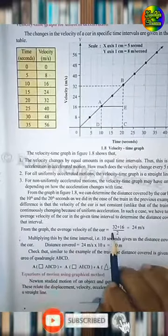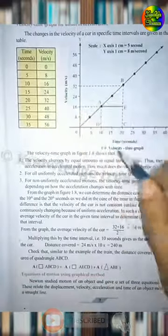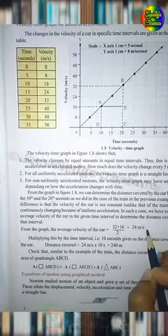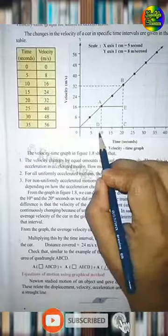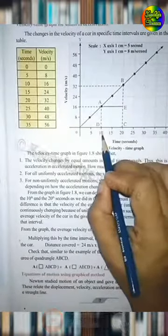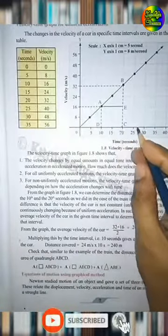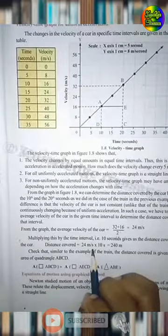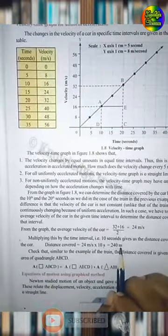Therefore, the average velocity of the car is equal to 32 plus 16 divided by 2, that is equal to 24 meter per second. The time interval is T2 minus T1, that is 20 minus 10, equal to 10 seconds. Therefore, the distance covered is equal to 24 meter per second into 10 seconds, equal to 240 meters.